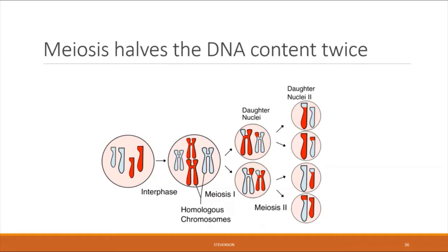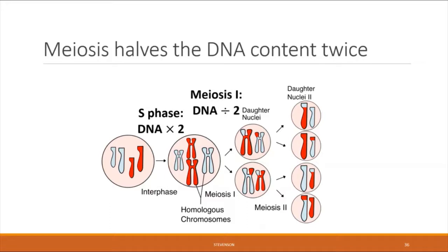To summarize how meiosis achieves this: germline cells duplicate their DNA during interphase S phase, so their DNA is multiplied by two. But once the cells enter meiosis, the DNA content is cut in half not just once but twice, which leaves the four gametes with a half set of DNA necessary to engage in sexual reproduction.